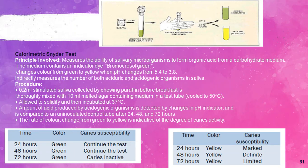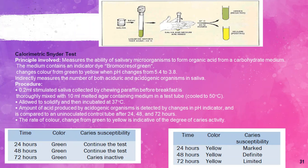The colorimetric test measures the ability of salivary microorganisms to form organic acids from a carbohydrate medium. The medium contains an indicator dye that changes color from green to yellow when pH changes from 5.84 to 3.8, which indirectly measures the number of both cariogenic and acidogenic organisms in saliva. Procedure: 0.2 ml of stimulated saliva collected by chewing paraffin before breakfast is mixed with 10 ml of melted agar-containing medium with green texture dye, allowed to set, then incubated at 37 degrees. The amount of acid produced is detected by changes in pH indicator and compared to an uninoculated control tube after 24, 48, and 72 hours.